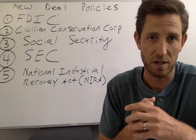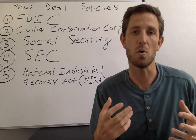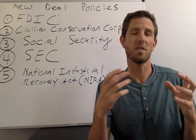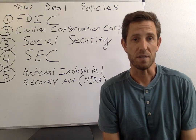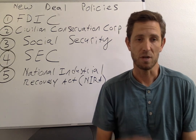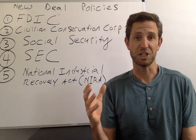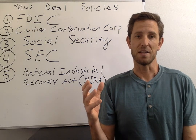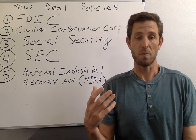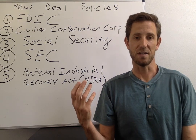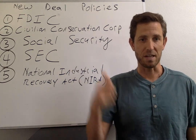Franklin Roosevelt, elected in 1932, has come to be known as one — maybe more than any other president — who sought out a really active role for government in the economy. He introduced a lot of reforms, a lot of agencies, a lot of government action in the 1930s, and some of those policies and reforms persist until today. You might see some on the board right behind me.